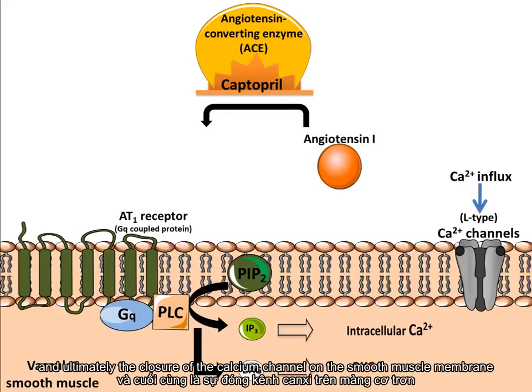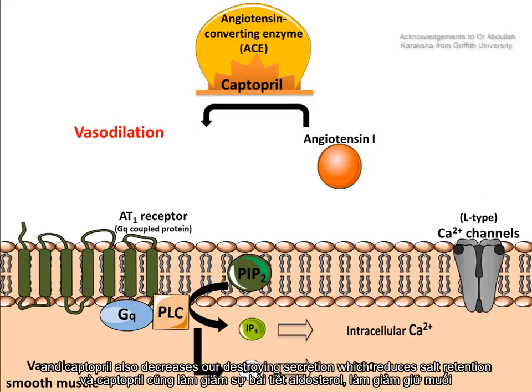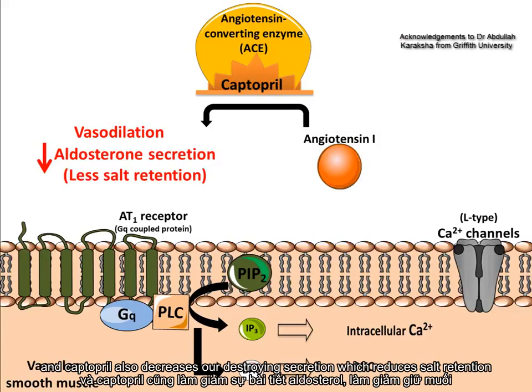closure of the calcium channel on the smooth muscle membrane. This leads to a relaxation of the smooth muscle leading to vasodilation, and Captopril also decreases aldosterone secretion which reduces salt retention.